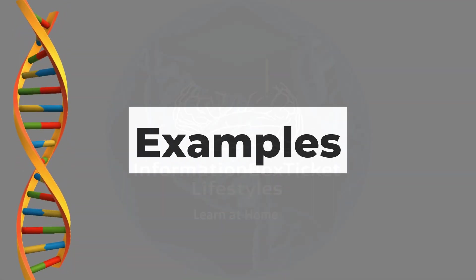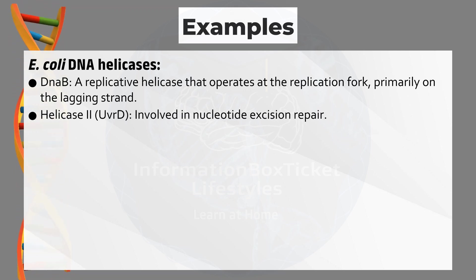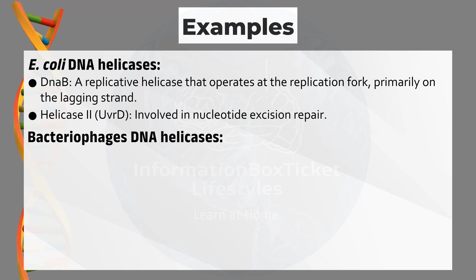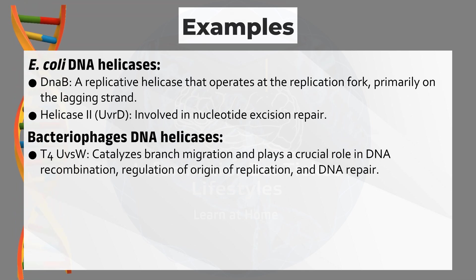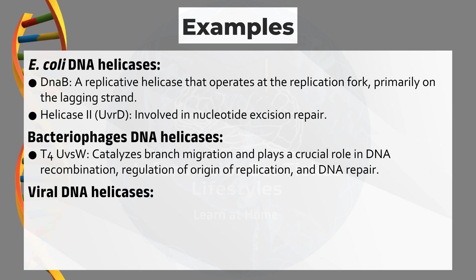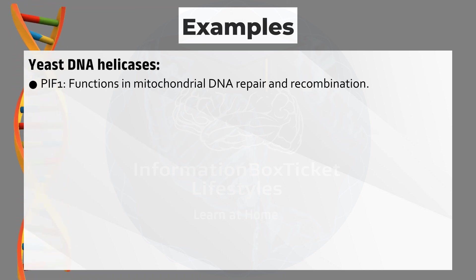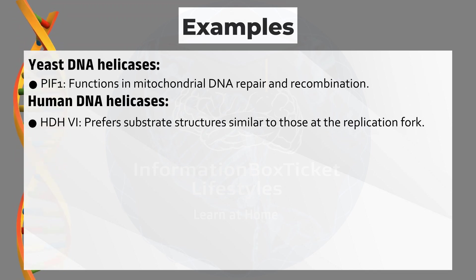Examples of DNA Helicases — E. coli: DnaB is a replicative helicase that operates at the replication fork, primarily on the lagging strand. Helicase II (UvrD) is involved in nucleotide excision repair. Bacteriophage: T4 UvsW catalyzes branch migration and plays a crucial role in DNA recombination, regulation of the origin of replication, and DNA repair. Viral: HSV-1 UL-9 protein is an origin-binding protein essential for the initiation of HSV replication. Yeast: Pif1 functions in mitochondrial DNA repair and recombination. Human: HDH-IV prefers substrate structures similar to those at the replication fork.